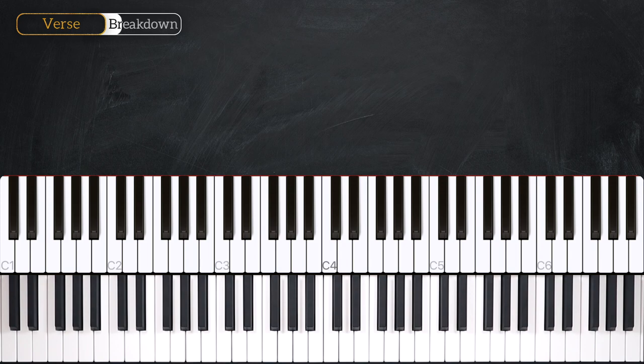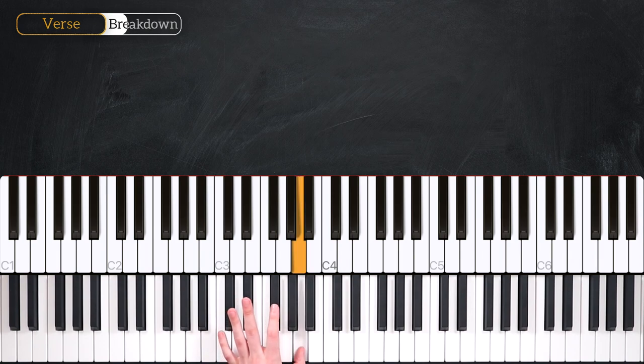We're going to start by looking at the single note pattern. In the left hand, we're simply playing the root of the chords in the order that we listed them before. We're going to have four beats of E, then B, C sharp, and A. And we're going to play through that pattern twice.